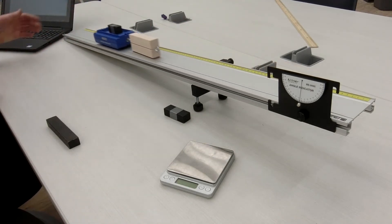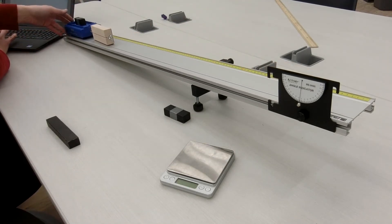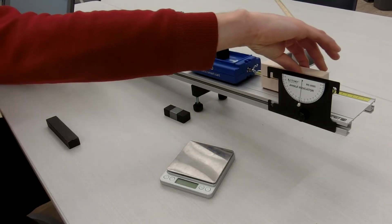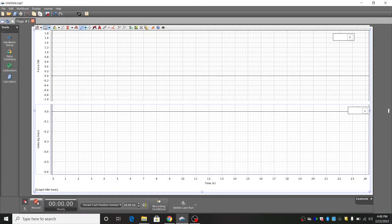Put enough additional mass in the cart so that the gravitational force acting along the track length is enough to overcome the static frictional force and cause the cart to accelerate. Begin recording data in the software and release the cart to roll down the ramp.